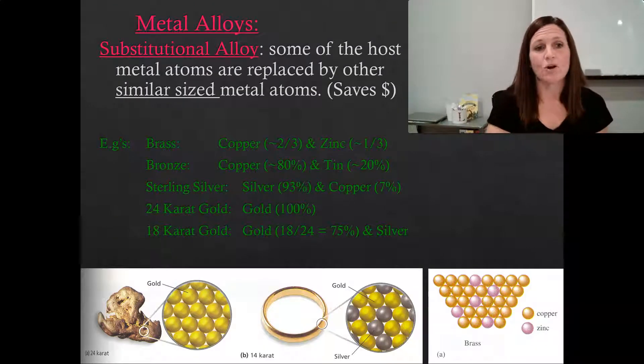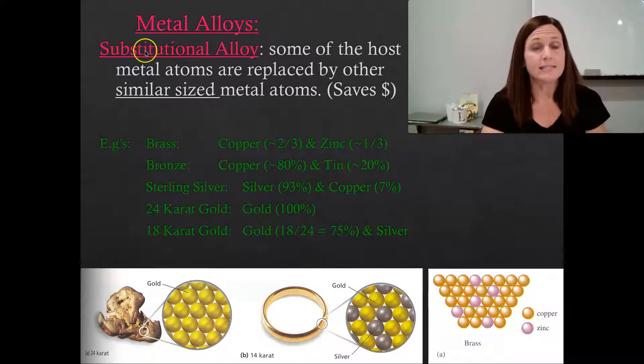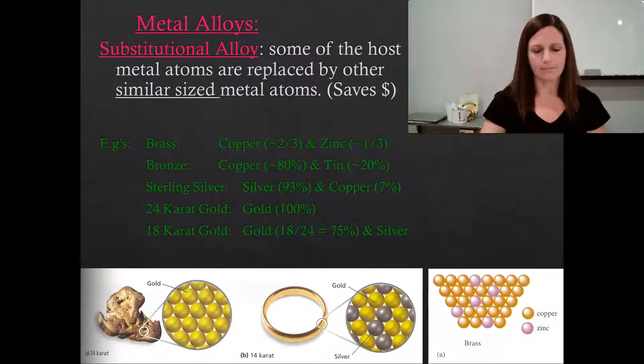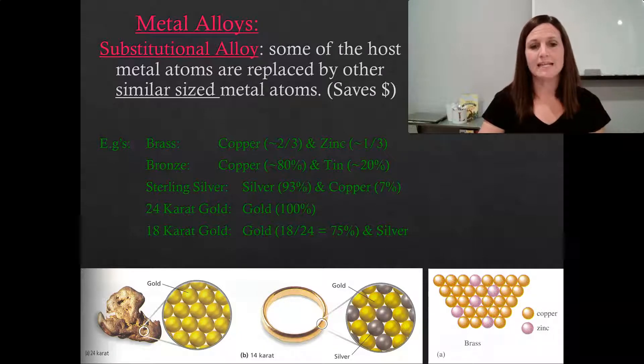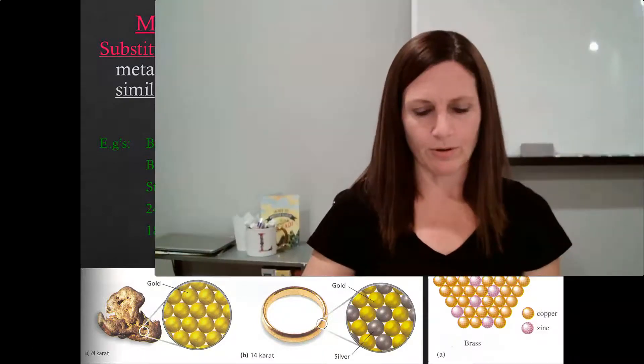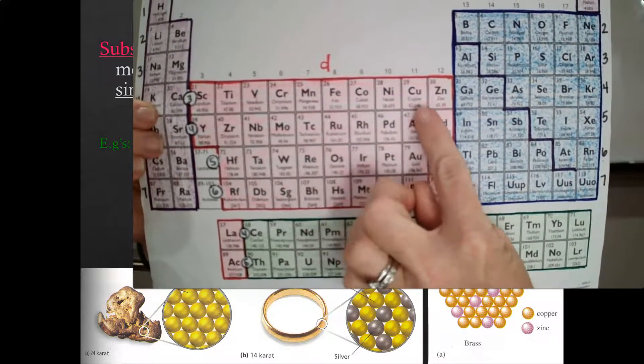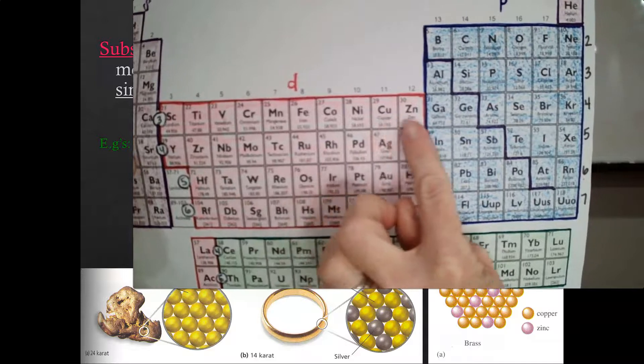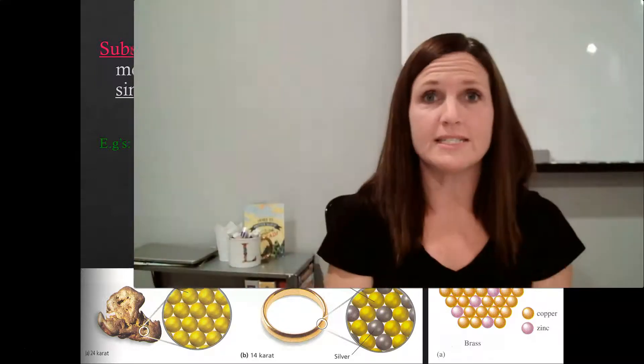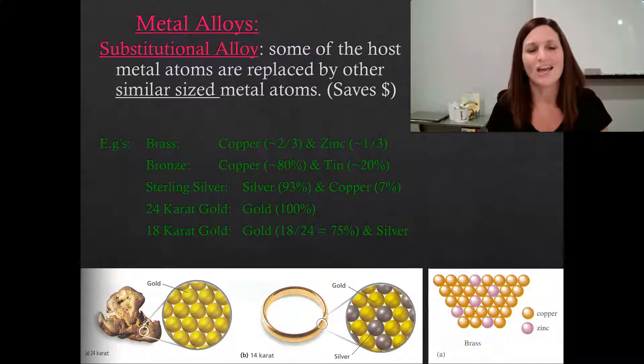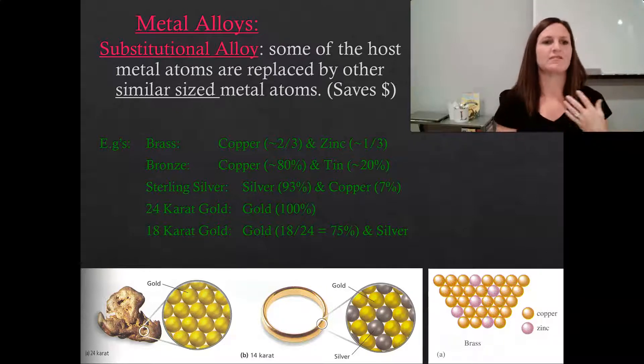First type of metal alloy is called a substitutional alloy. A substitutional alloy replaces some of the host metal with similar sized metal atoms. So an example of a substitutional alloy mixes together copper and zinc. When we look at the periodic table, copper and zinc are right next to each other. They're about the same size, but they're very different prices. Copper is much more expensive than zinc.